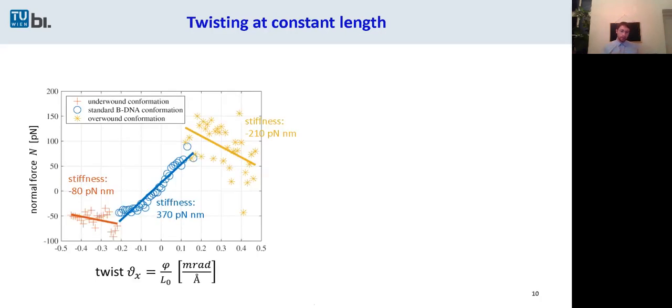First of all, normal force. The horizontal axis is twist and the vertical axis is normal force. And here you can see that for those three conformations, we not only have different values of the stiffness, we even have different signs of the values.